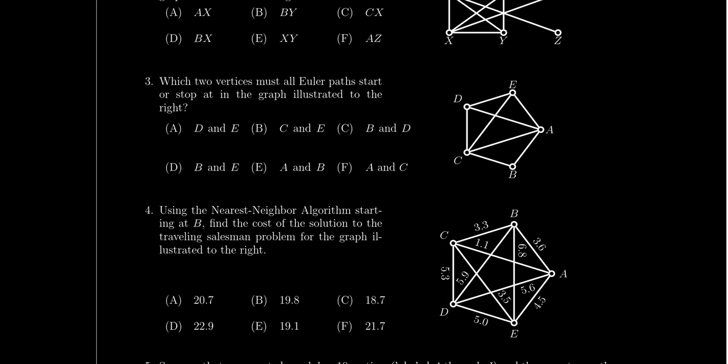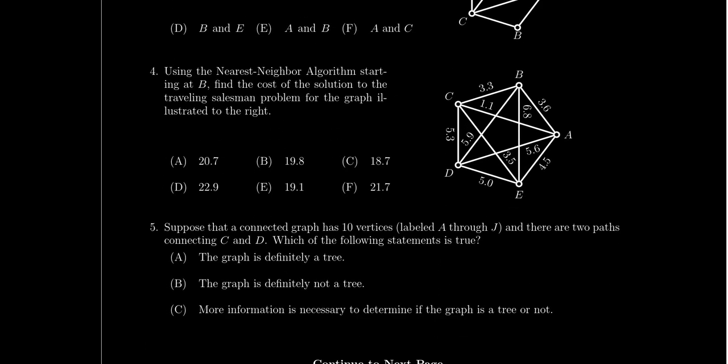Question number three asks about Euler paths and applies Euler's theorem. Euler's theorem states that a graph has an Euler circuit if and only if all vertices are even-degree. It also has an Euler path — visiting every edge once and only once but not starting and stopping at the same place — exactly when two vertices are odd and all others are even. This question asks which two vertices must all Euler paths start or stop at, meaning you identify the two odd-degree vertices.